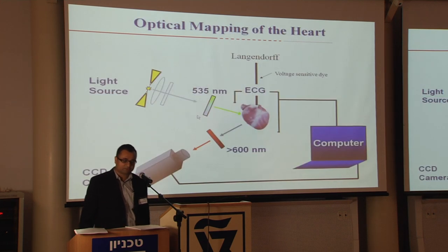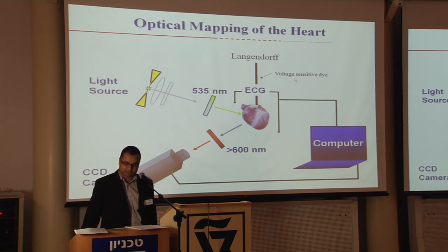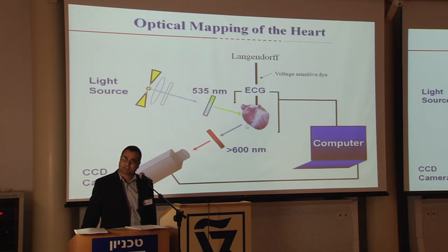In optical mapping of the heart, you take an isolated heart, put it in a Langendorff apparatus, and keep it alive for about three to four hours. You perfuse the heart with a voltage-sensitive dye, shine a green light laser on it, and when electrical activity occurs in the heart, you capture it by emission through a red filter with a CCD camera.